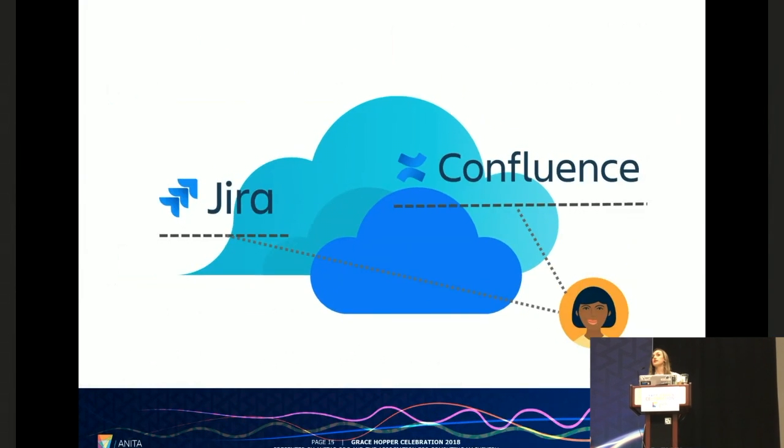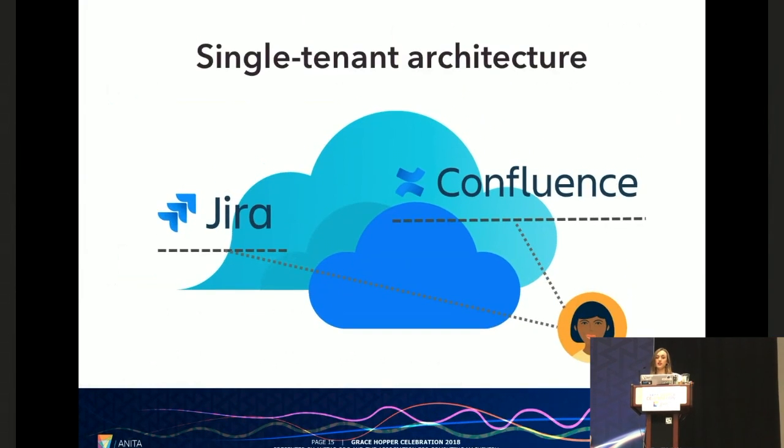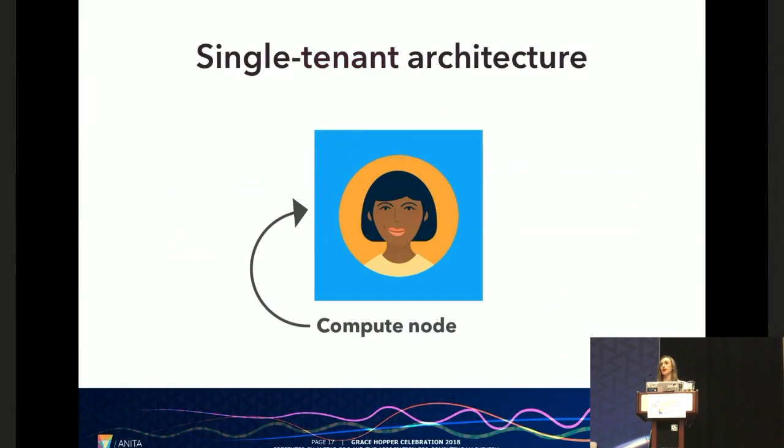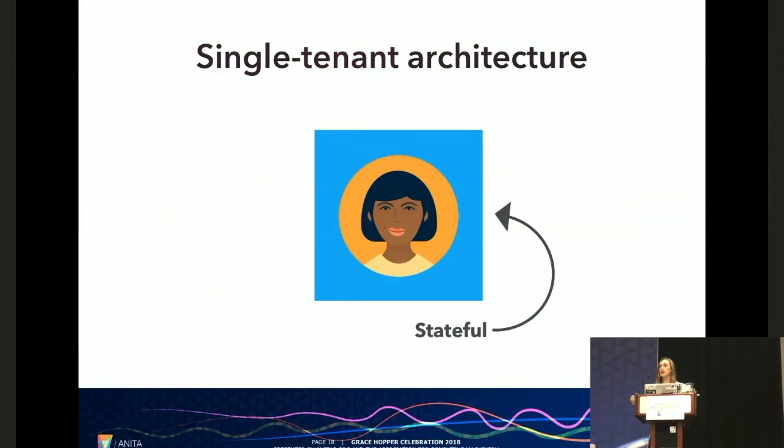So this is what is known as a single tenant architecture, where a tenant is just a cloud customer. So in Atlassian's case that would typically be an entire company. Now single tenant architecture is a model where a single compute node can serve a single tenant and this is because those compute nodes are stateful which means that they have pre-existing knowledge of the tenants that they're able to serve. And to be honest we got really good at doing single tenant architectures. We did this for many many years and we were really able to get the most out of this infrastructure.